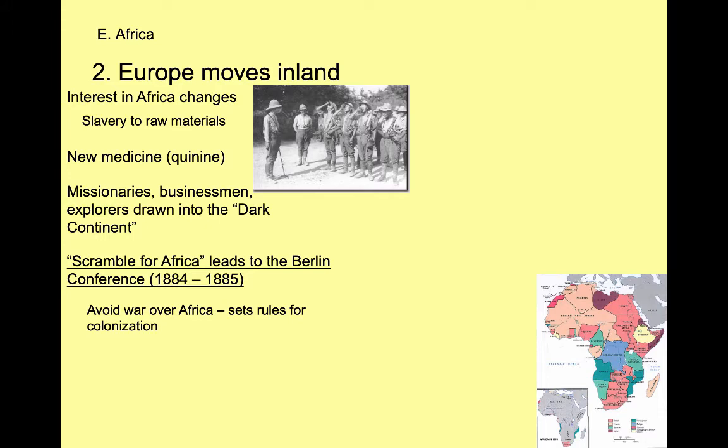To avoid war, Europeans sat down in Berlin, Germany, and held what's called the Berlin Conference from 1884 to 1885. At the peace table, they carved up Africa — saying 'this is mine, this is yours' — and took it. Of course, there weren't any Africans at the Berlin Conference, so Africa was divided up without the Africans themselves present.